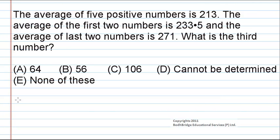The average of 5 positive numbers is 213. The average of the first two numbers is 233.5 and the average of the last two numbers is 271. What is the third number? The options given are 64, 56, 106, cannot be determined, or none of these.